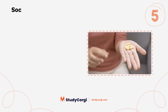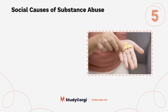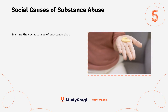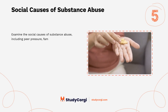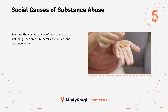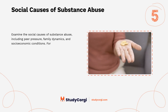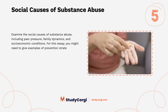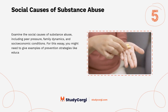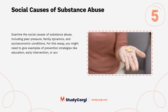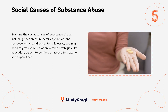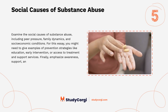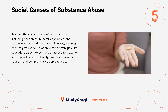Social causes of substance abuse. Examine the social causes of substance abuse, including peer pressure, family dynamics, and socioeconomic conditions. For this essay, you might need to give examples of prevention strategies like education, early intervention, or access to treatment and support services. Finally, emphasize awareness, support, and comprehensive approaches to tackle this issue.